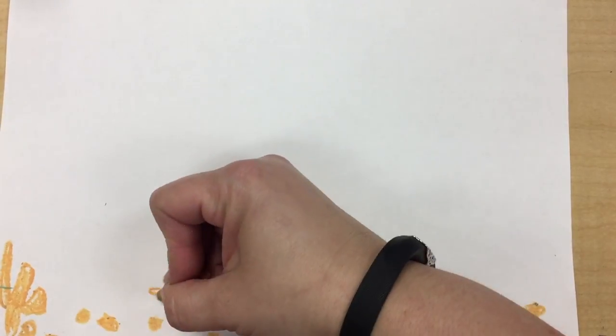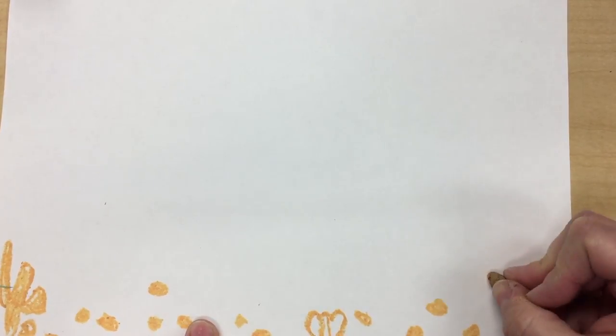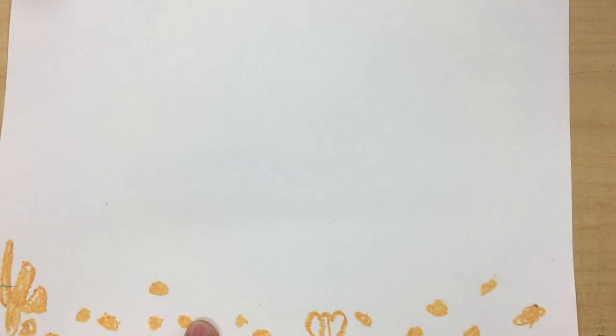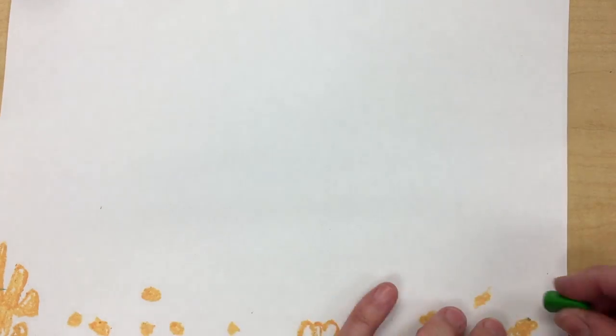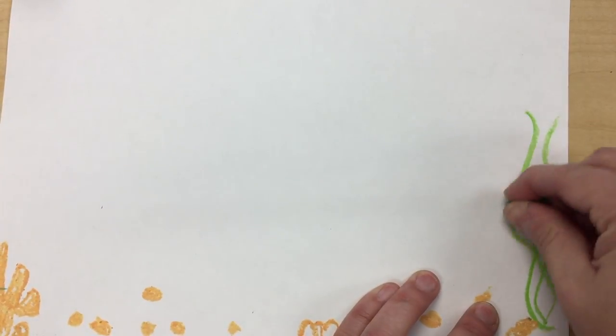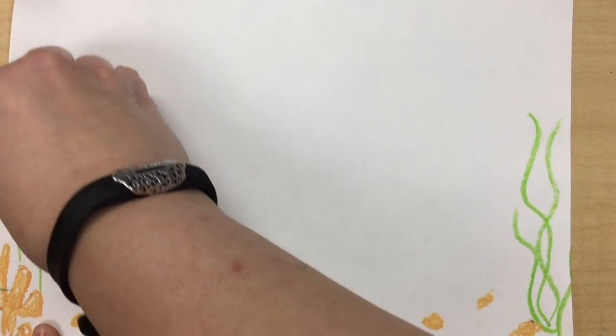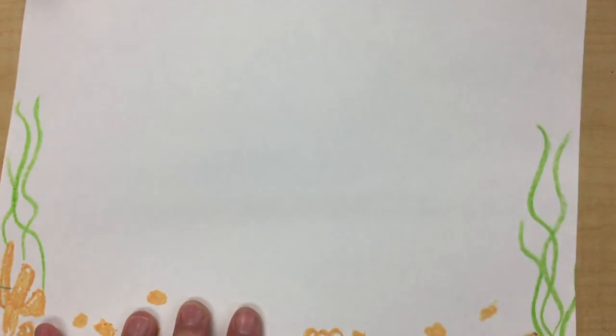Now Leo Lionni, when he wrote the Swimmy book, used some very special artist techniques to create his water and to create his Swimmy fish. So we're going to do our own version of the Swimmy illustrations and we're going to use several of the same techniques that Leo Lionni used to make those pictures.